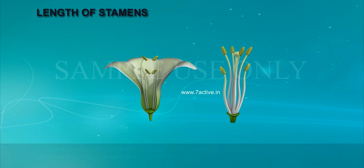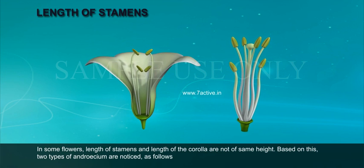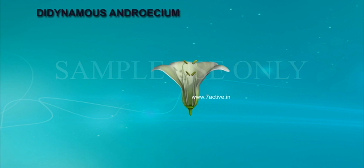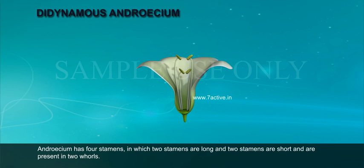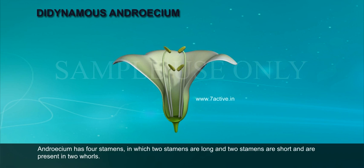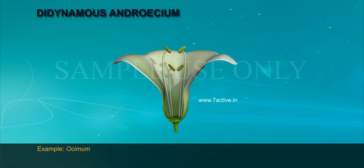Length of stamens: In some flowers, the length of stamens and the length of the corolla are not of the same height. Based on this, two types of androcium are noticed. Didynamous androcium: Androcium has four stamens, in which two stamens are long and two are short, present in two whorls. Example: Ocimum.